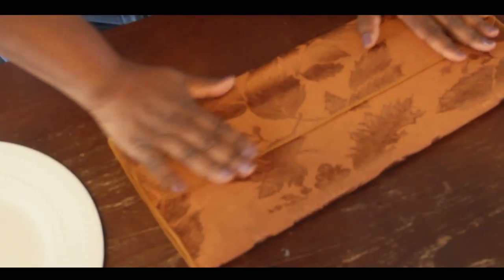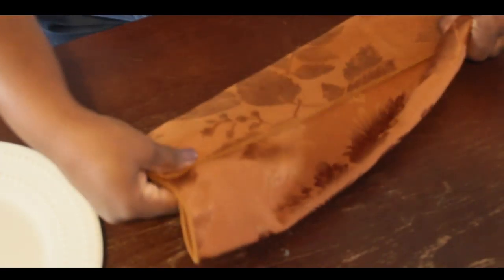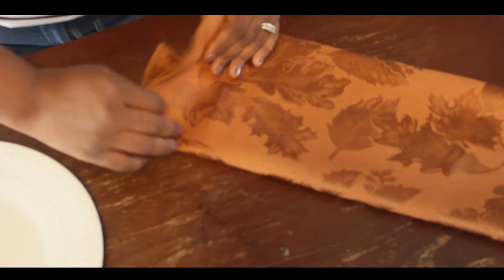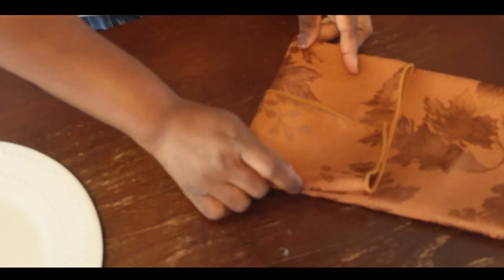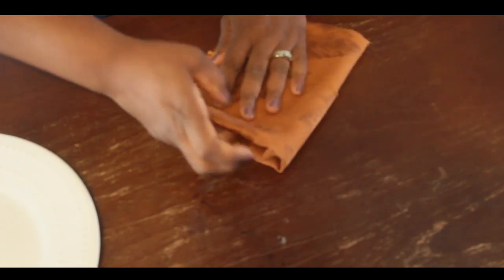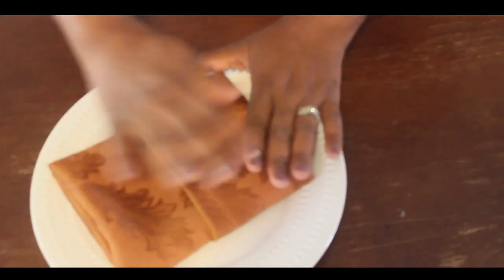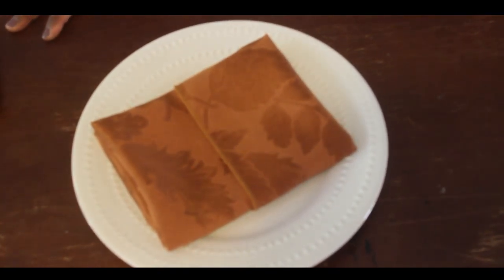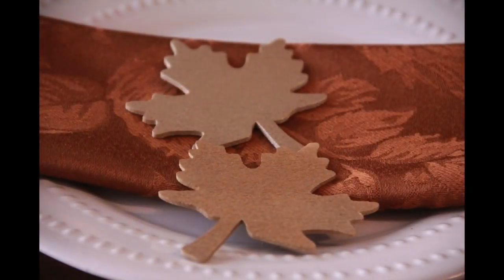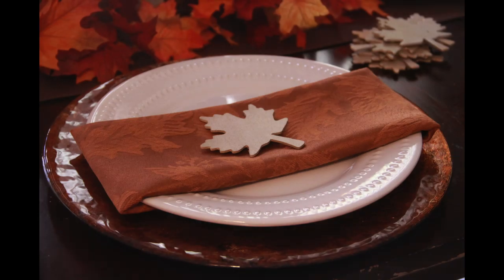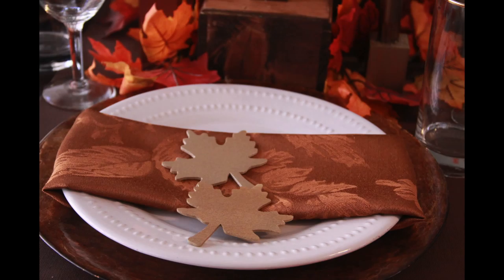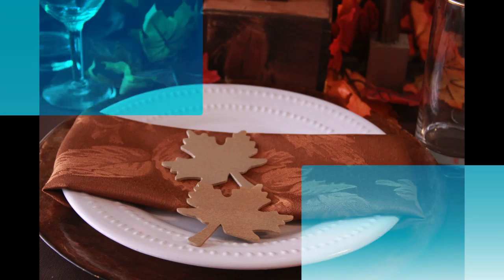This one is going to be a menu card napkin fold. So you fold it down first and then you fold it up and now you're going to turn it over and just fold it in thirds. Make sure your edges are out and you place it on your plate and now you can slide a menu card in there. Nice, simple and elegant.